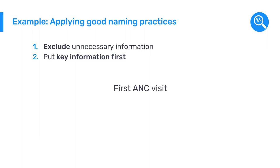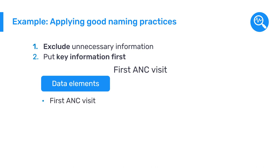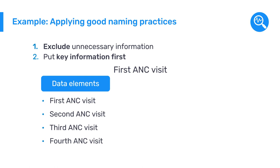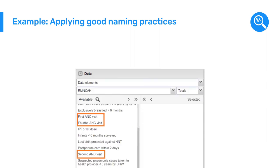Let's think about the particular order of the words in 'first ANC visit.' Conventionally, first ANC visit would be the first of a series of visits, with additional related data elements: first ANC visit, second ANC visit, third ANC visit, and fourth ANC visit. Although this makes sense in plain language, when applied to DHIS2 this might not work as well because data elements in DHIS2 are alphabetically ordered. In a list of data elements, they would appear as: first ANC visit, fourth ANC visit, second ANC visit, and third ANC visit. If there are many other elements in your system, your ANC elements might end up separated in a list and would be harder to find.